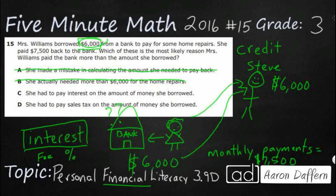Answer C: she had to pay interest on the amount of money she borrowed. That is most likely our answer. Let's double-check D: she had to pay sales tax on the amount she borrowed. That's tricky — if you've ever been to a dollar store, something that costs a dollar turns into about $1.08 because of sales tax, and the state gets that money. But you don't pay sales tax on loans or credit, and even if you did, the bank wouldn't get it — the state would. So that is not correct. Our answer is C: she had to pay interest so the bank could make their money.